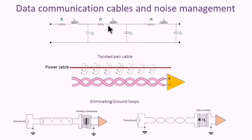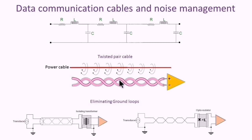A twisted pair cable improves the performance of data transmission. A twisted pair technique helps to reject external electromagnetic interference and also reduces the crosstalk effect between the two conductors.